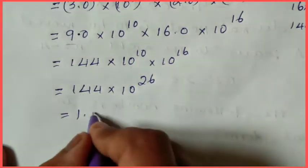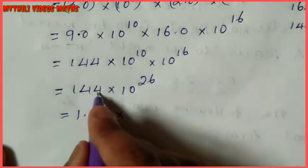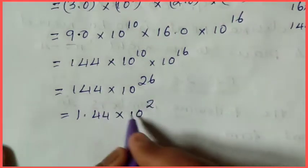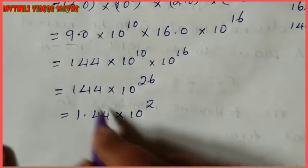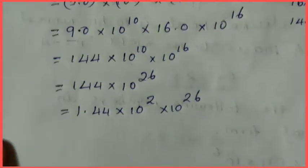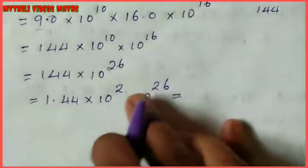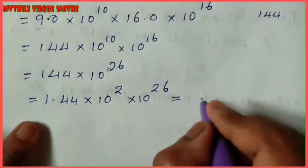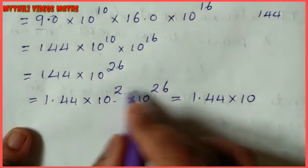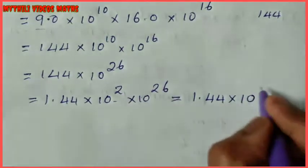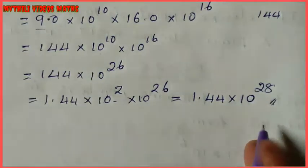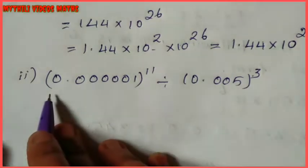144 in scientific notation is 1.44 into 10 power 2. So we write 1.44 into 10 power 2 into 10 power 26. Since the bases are equal, we add powers: 26 plus 2 equals 28. The answer is 1.44 into 10 power 28.